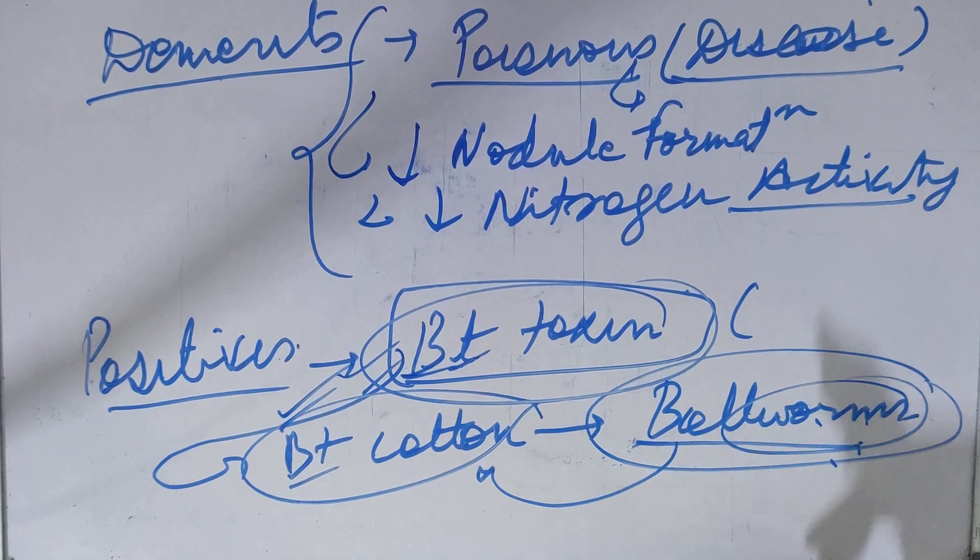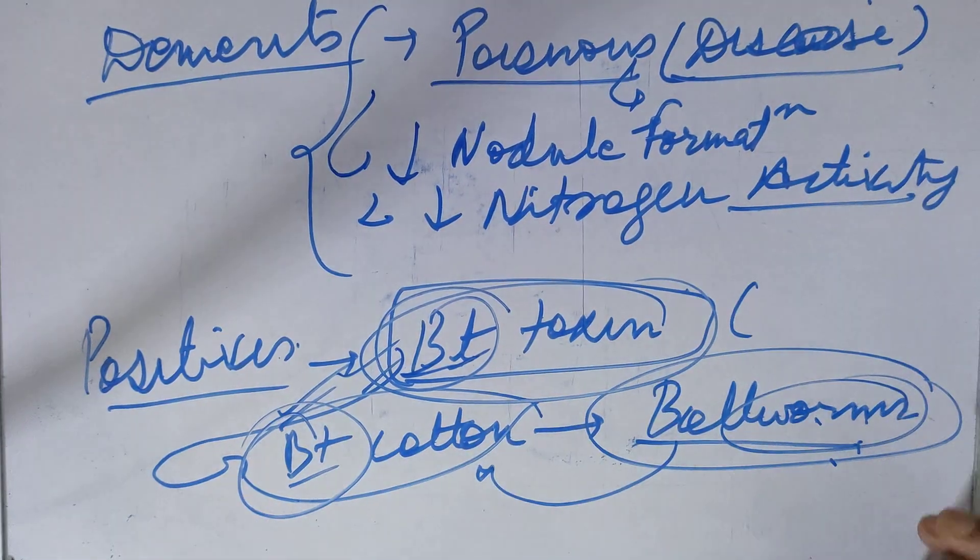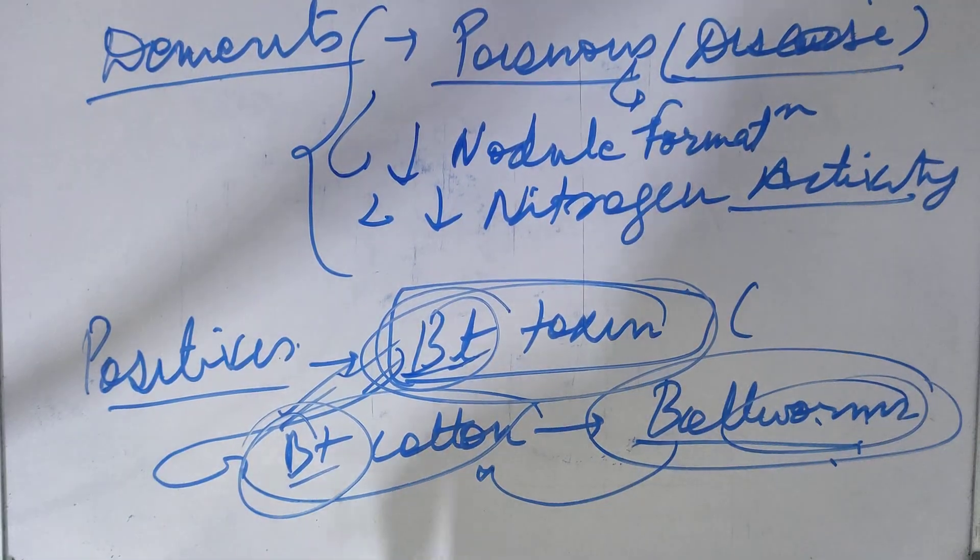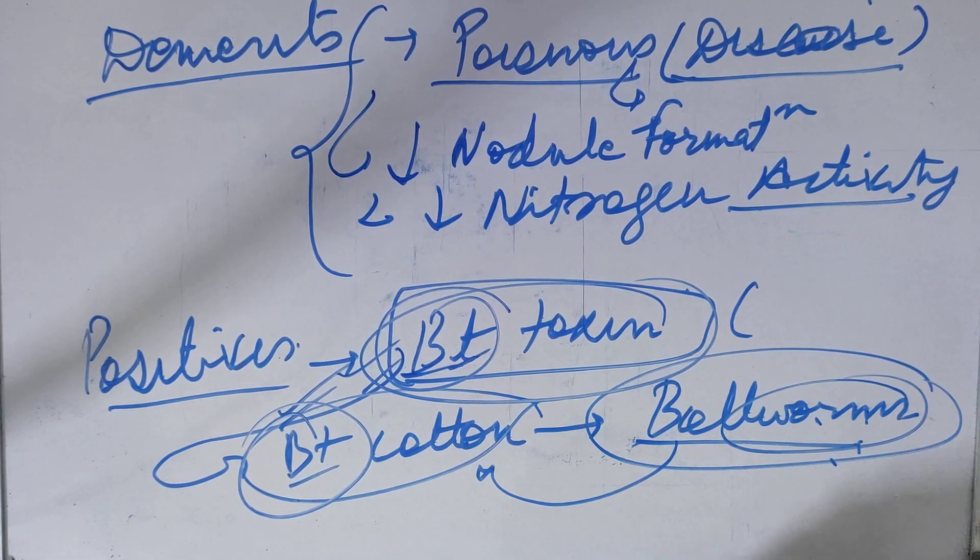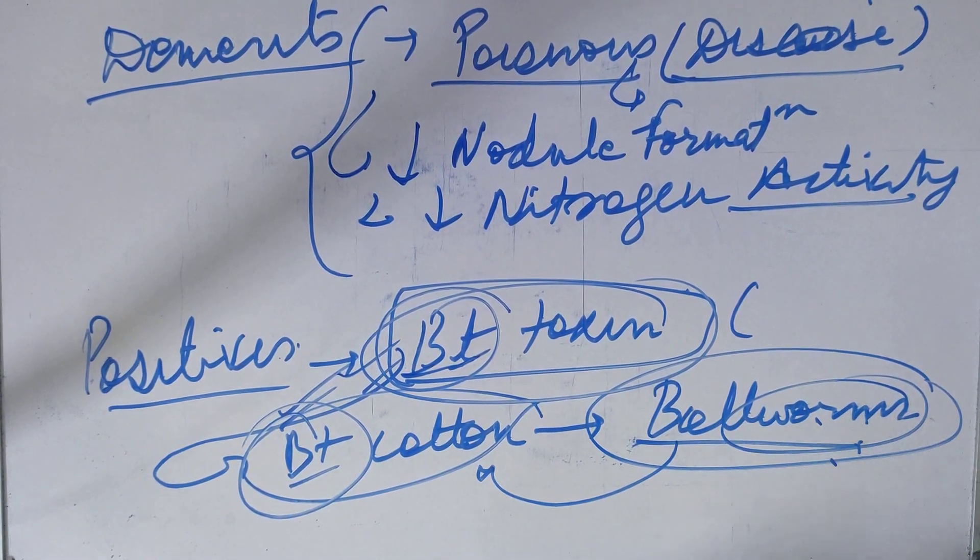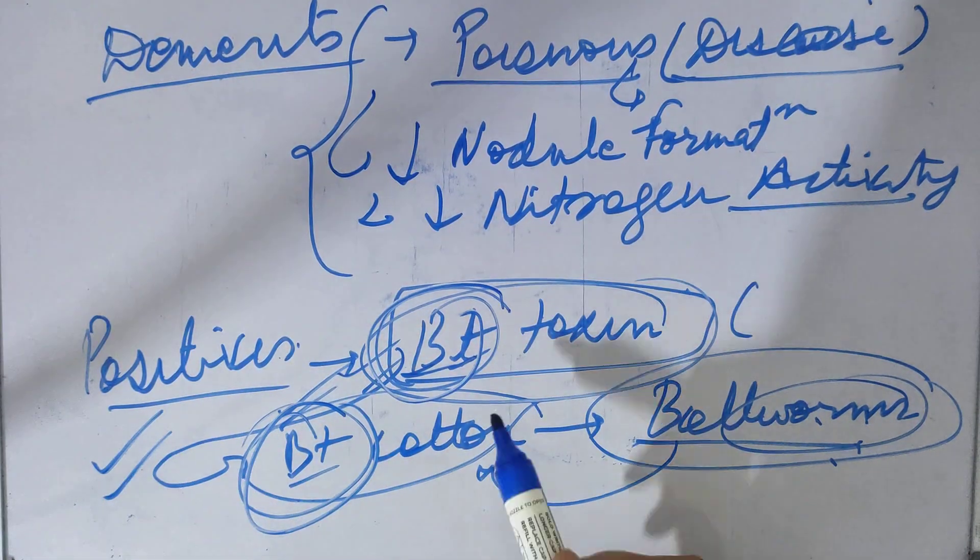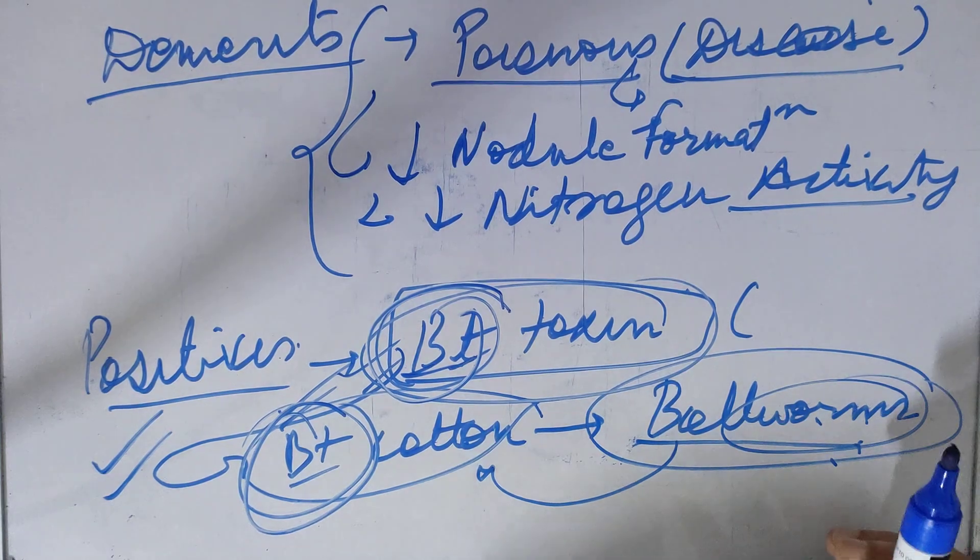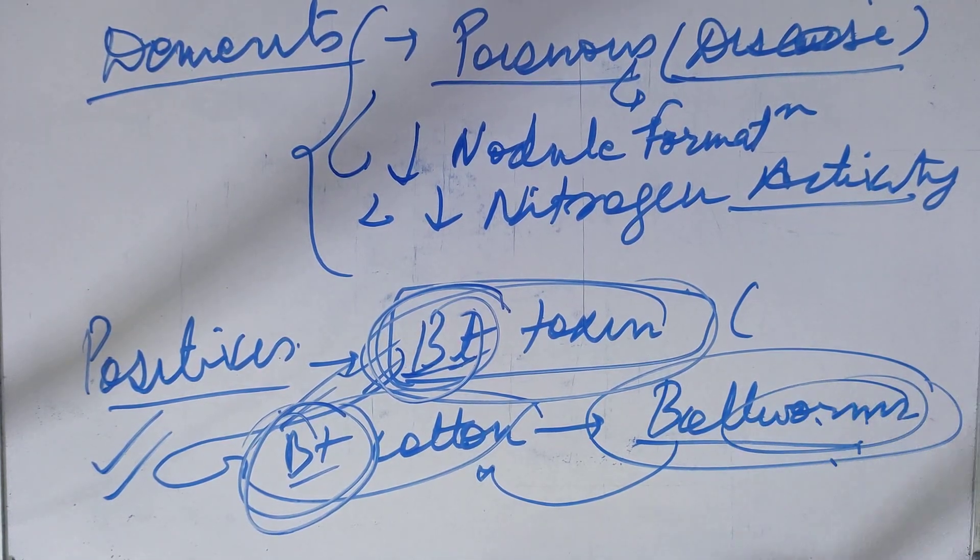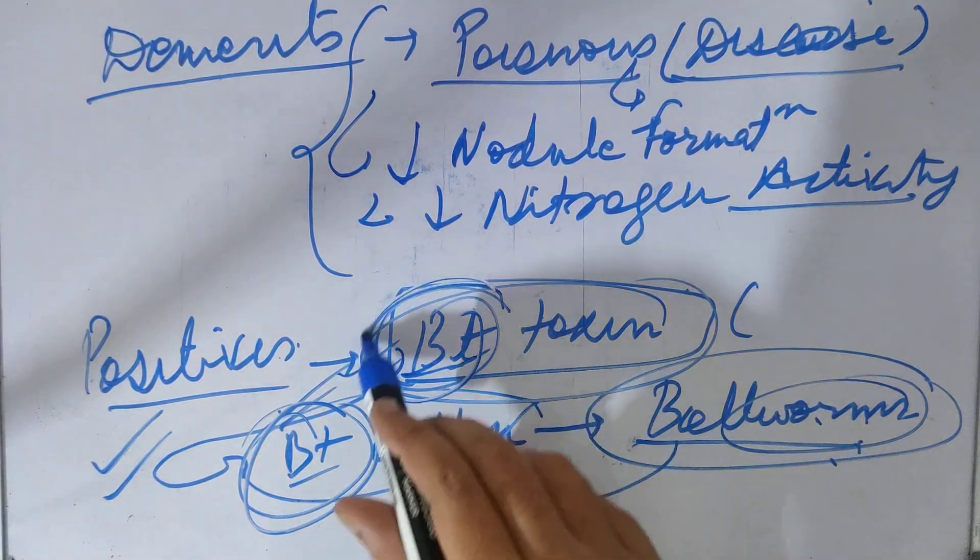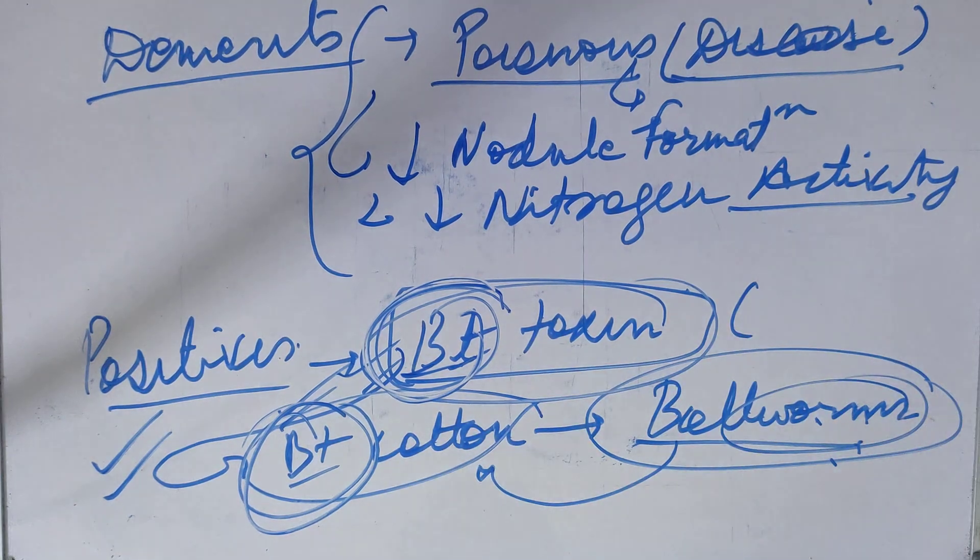Now we have Bt maize, Bt brinjal, which use Bt toxins. So it is the major positive. You can understand that if we use toxins, that could be also helpful for us. This Bt toxin is the major example and you must write it in your answers. It will enhance your answers and it will show that you are thinking about the merits and positives as well. Please do write these types of points in your answers.